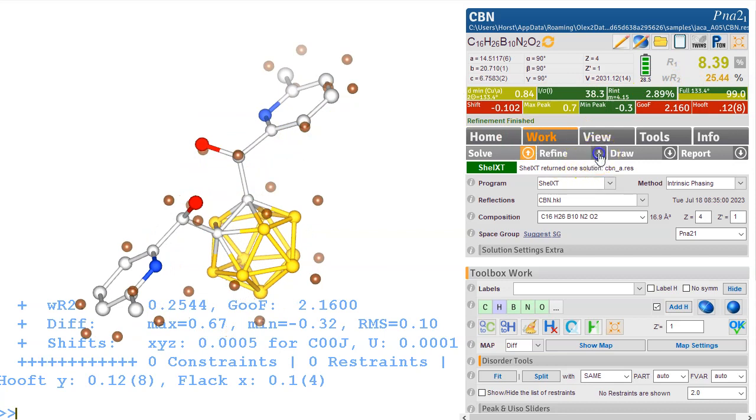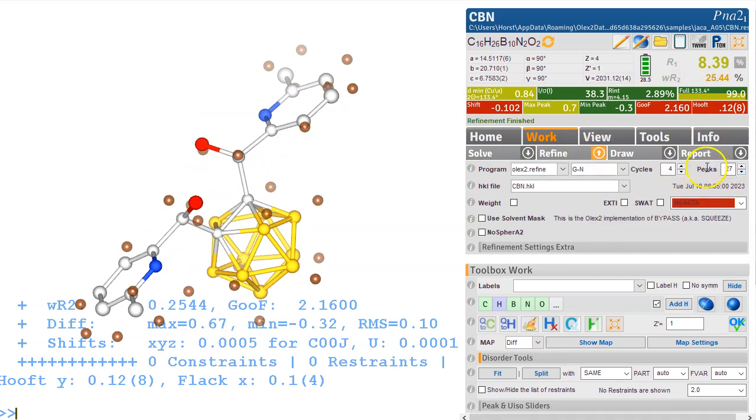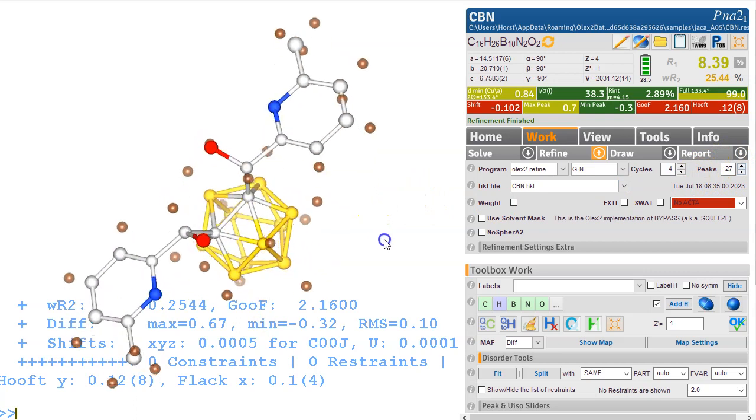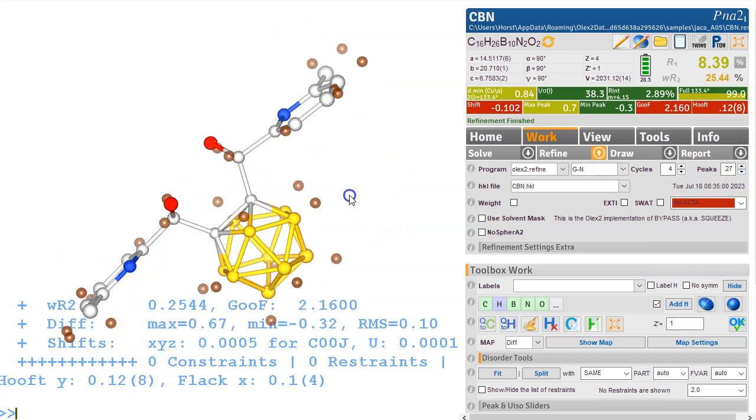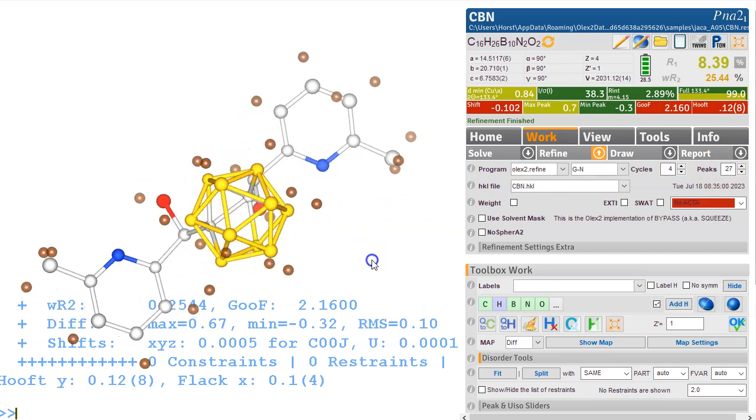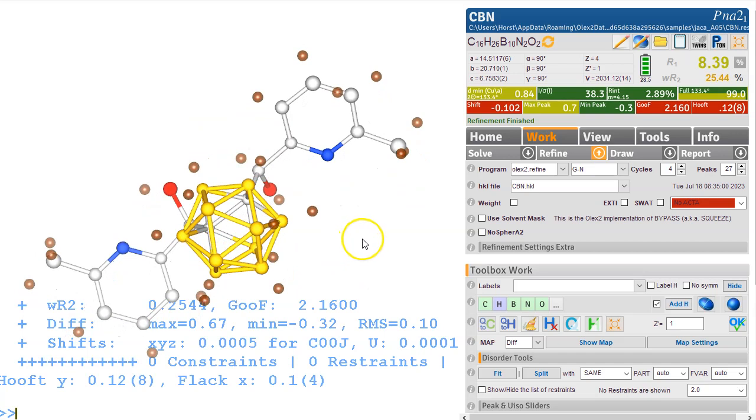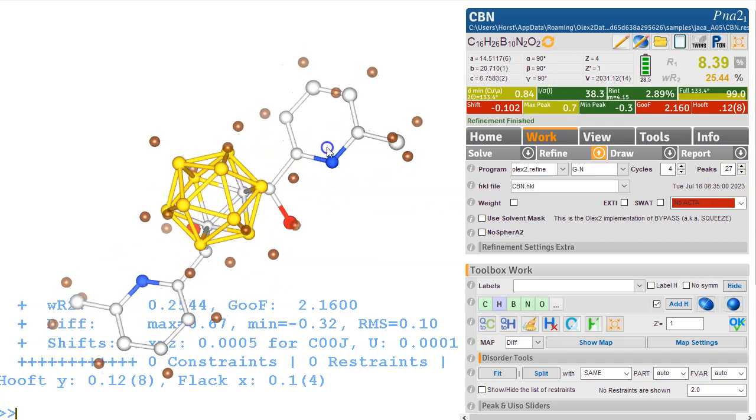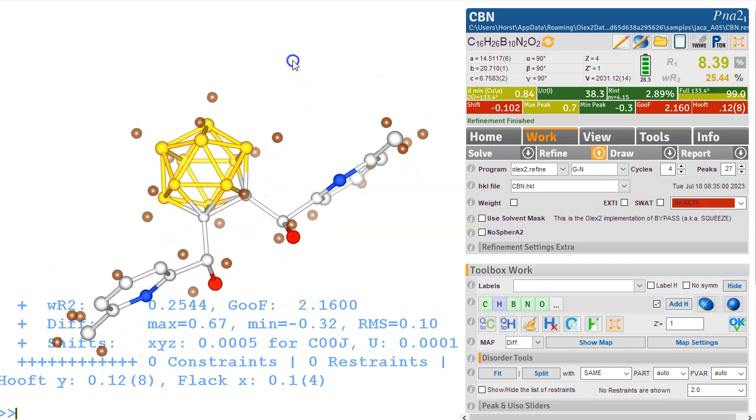Olex2, by the way, is set to show the number of peaks that it expects. So Olex2 looks at the structure and thinks, how many hydrogen atoms are required? And this is roughly, it's a good guess, but it's a guess. So it seems to think that 27 hydrogen atoms are required. And this is what's showing. So the peaks that are showing here correspond to the number of hydrogen atoms. If you change that number here and put another number of peaks, then Olex2 will just show that number of peaks. So this is a bit of automation that is quite useful, I think, because you can see what's happening.